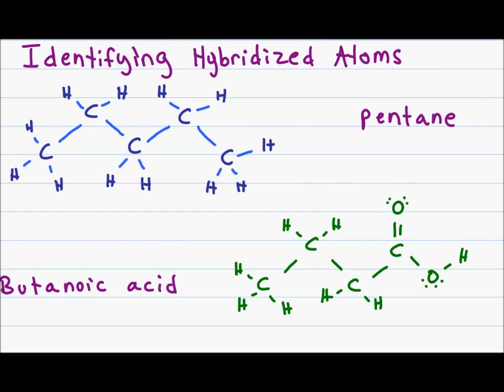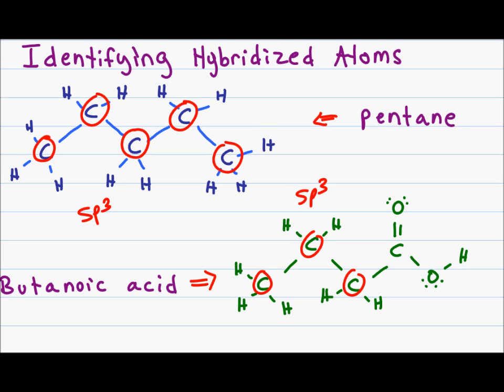Let's apply this to a few quick examples. On the left, we have pentane, which is made of carbons and hydrogens. As you see, every carbon has single bonds and no double or triple bonds, thus every carbon in this molecule is sp3 hybridized. On the right, we have butanoic acid. Once again, we have a number of carbons with only single bonds, so these carbons are all going to be sp3 hybridized.